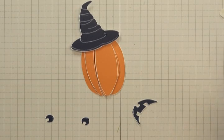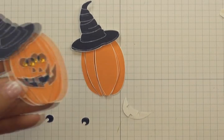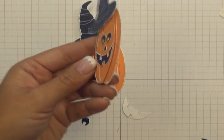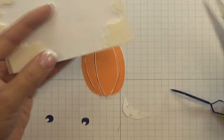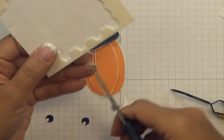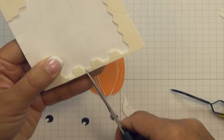Now for the face, you can either stick it on flat. And you can see that's what I did here, the face is on flat. Or you can use dimensionals to give it some extra pop. And I think what I'm going to do is, I'm going to do this one with dimensionals.